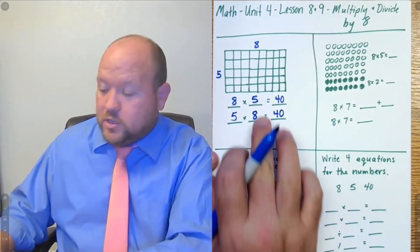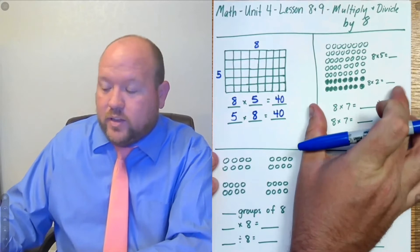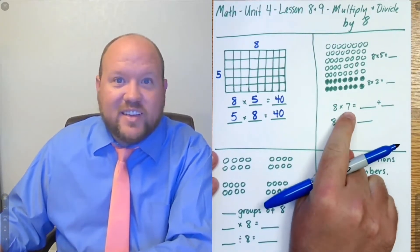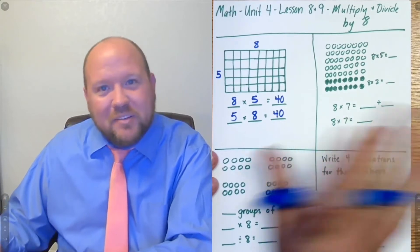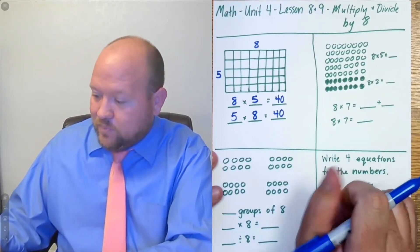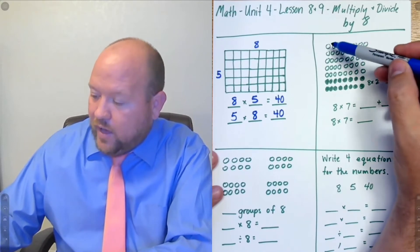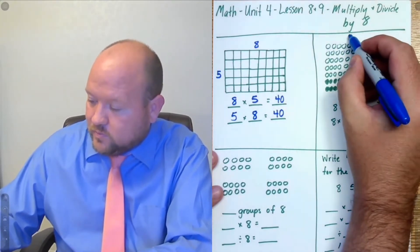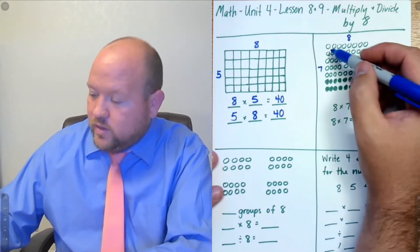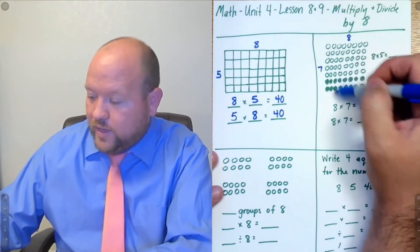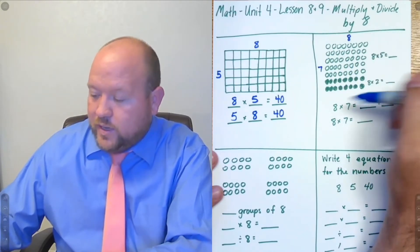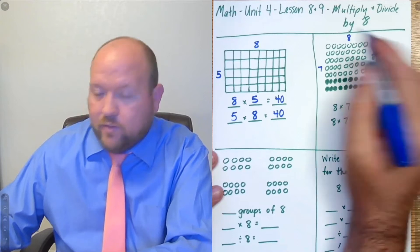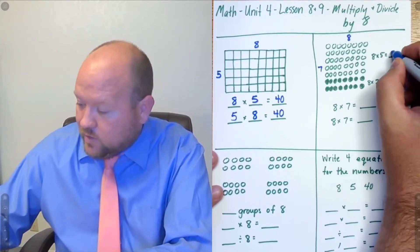Now we're going to take what we just did here and apply it to this problem that you may not have memorized yet. Now, if you know your 7s, you already know the answer to this one. But in case you don't, we can look at another way to solve this. So here we have 8 times 7. So there's 8 across and there are 7 rows. So 8 columns, 7 rows. And maybe I don't know that fact yet. So what I can do is 8 times 5. Should have that one memorized. We just did it. 8 times 5 is 40.